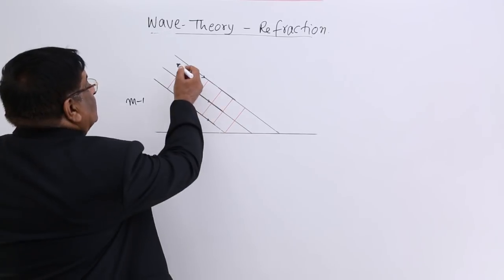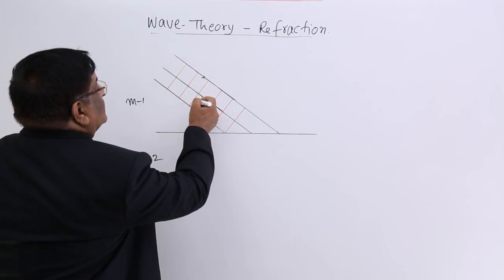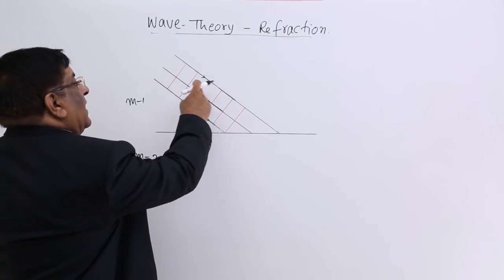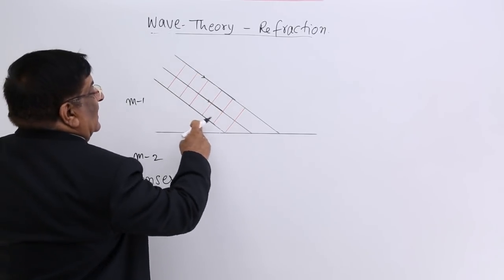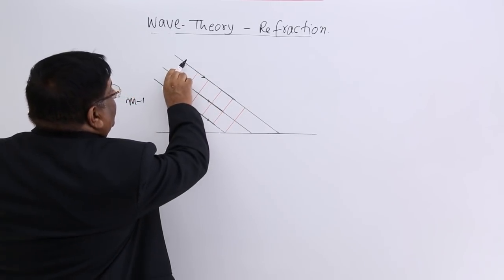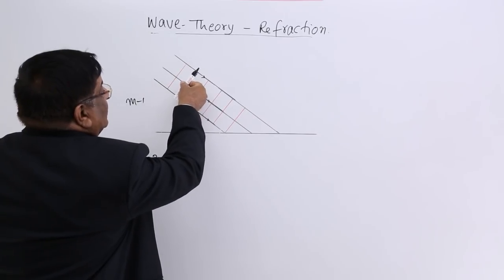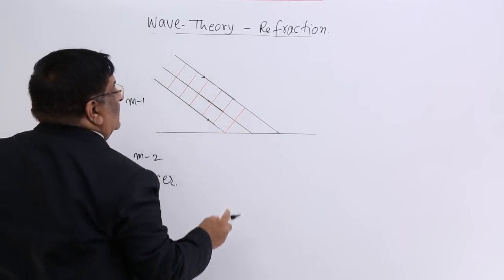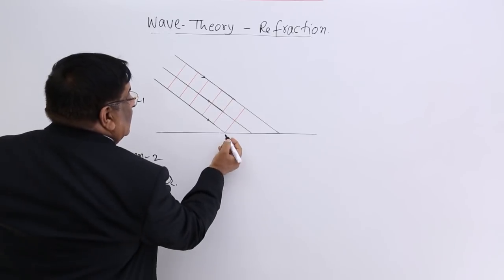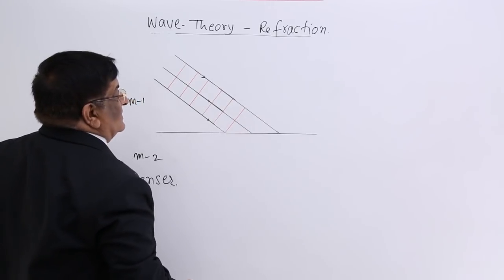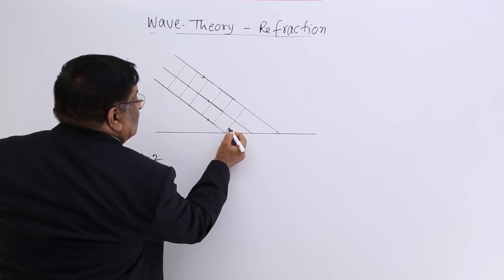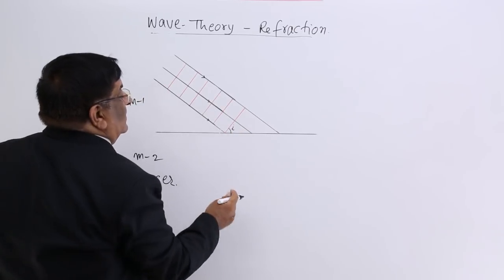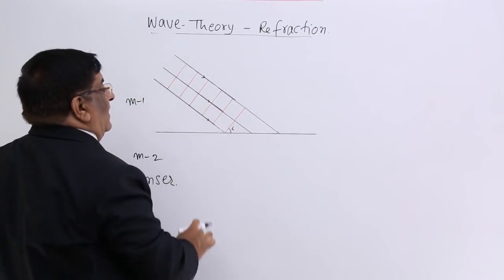These are the wave fronts — the red ones — and they are moving in this direction, as shown by the black lines. This plane wave front keeps on moving according to wave theory until it reaches this point. When it reaches this point, we say this angle is the angle of incidence i, because the two surfaces make angle i.